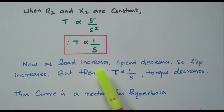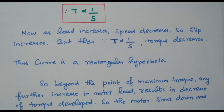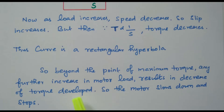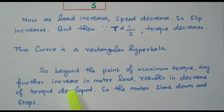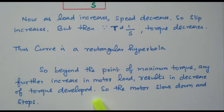As load increases, speed decreases and slip increases, but since T is directly proportional to 1/S, the torque decreases. This curve is a rectangular hyperbola (1/S). Beyond the maximum torque, any further increase in motor load results in a decrease of developed torque. So beyond the maximum point, if load is increased further, torque decreases, the motor speed slows down and the motor stops. We can load the induction motor only up to T_max at S equal to S_M.